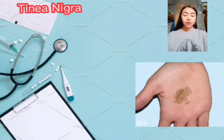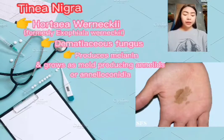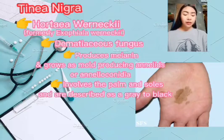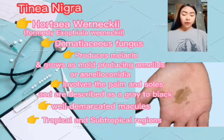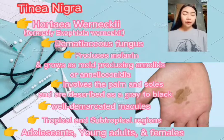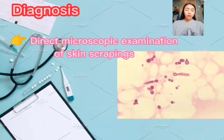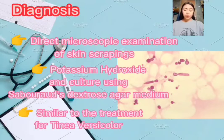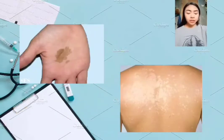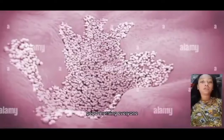Tinea nigra is caused by Hortaea werneckii, formerly Exophiala werneckii, a dematiaceous fungus that produces melanin and grows as a mold producing annelids or annelloconidia. Lesions involve the palms and soles and are described as grayish-black, well-demarcated macules. The infection is common in tropical and subtropical regions and more frequently seen in adolescents, young adults, and females. Diagnosis is made by direct microscopic examination of skin scrapings with KOH and culture using Sabouraud's dextrose agar. Treatment is similar to that of tinea versicolor.